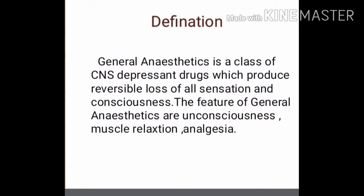Before the middle of the 1800s, pain-producing surgical and dental procedures were typically undertaken without the aid of effective anesthetic agents. Chemical methods available at the time included intoxication with ethanol, cannabis, or opium, whereas physical methods included packing a limb in ice, creating ischemia with tourniquets, or inducing unconsciousness by a blow to the head.